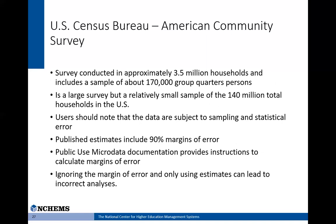The American Community Survey is conducted in about 3.5 million households each year, including about 170,000 persons in group quarters such as college dormitories, prisons, and nursing homes. This is relative to the 140 million households and 8 million persons in group quarters that are actually eligible for the survey. So it's a large survey but a very small sample of the population, and thus can be subject to a fair amount of statistical error. With each published estimate, the Census Bureau provides what's called the 90 percent margin of error — a measure of how close our estimate might really be from the true population number, expressed as our estimate plus or minus the stated margin of error.